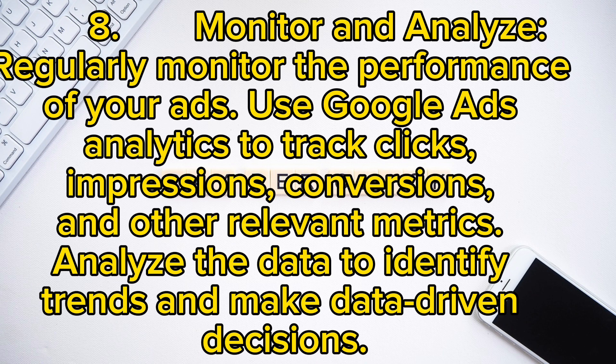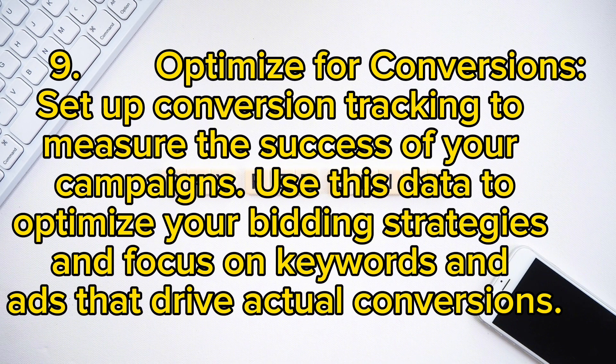8. Monitor and analyze: regularly monitor the performance of your ads. Use Google Ads analytics to track clicks, impressions, conversions, and other relevant metrics. Analyze the data to identify trends and make data-driven decisions. 9. Optimize for conversions: set up conversion tracking to measure the success of your campaigns. Use this data to optimize your bidding strategies and focus on keywords and ads that drive actual conversions.